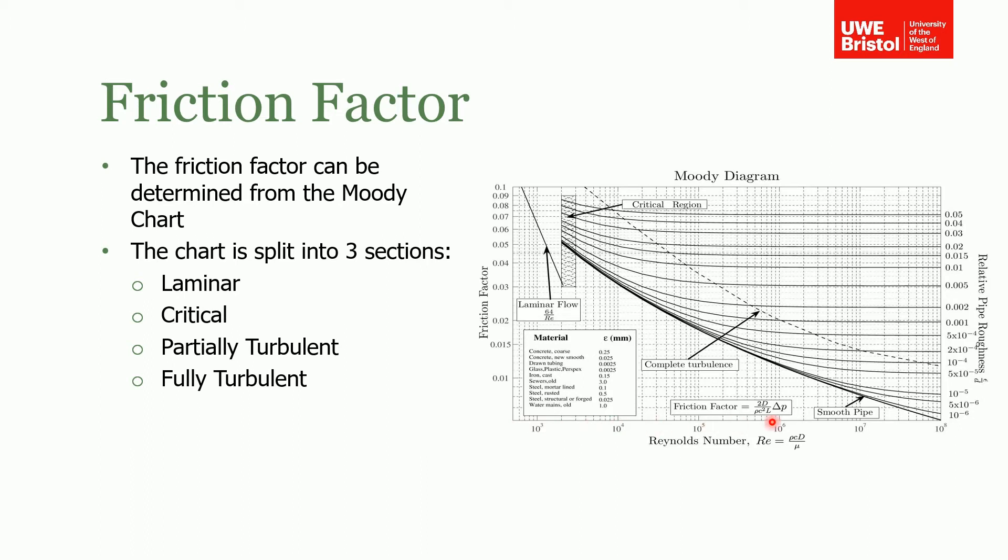So you find your Reynolds number, noticing that this is a log scale, and I'll go through some examples later on. Then you look up your relative pipe roughness, and these are the lines of relative pipe roughness for the values on here. You see where the two values intersect and then you read off your friction factor, which you can then use in your equation.